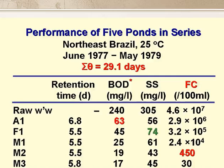This slide shows the performance of a series of five ponds in northeast Brazil in the late 1970s. The anaerobic pond had a retention time of nearly a week — much too long — and the facultative and three maturation ponds had retention times of about five and a half days. Most of the BOD and suspended solids were removed in the anaerobic pond as expected, and suspended solids actually increased in the facultative pond due to algae growth. The truly remarkable performance was the removal of faecal coliform bacteria — more or less by an order of magnitude in each pond — down to 30 per 100 ml in the final effluent, a better bacteriological quality than the water most people in developing countries have to drink.